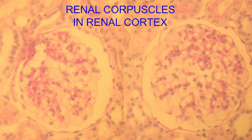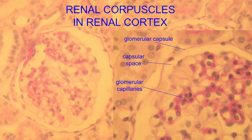All renal corpuscles exist in the renal cortex, and they can be recognized because their glomerular capillaries are surrounded by a glomerular capsule made of simple squamous epithelia, and a capsular space separates these.